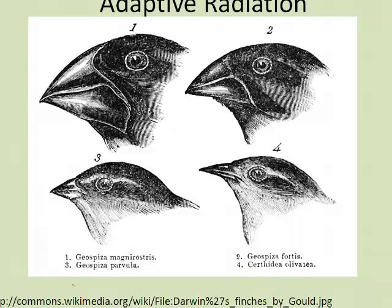The finches of the Galapagos Islands arrived as really just one species from the mainland, probably blown off the coast in some sort of storm. As they experienced different niches, those that were best suited to the individual niches they found themselves in survived, and as a result they began to evolve in different directions. Those that found themselves in an environment requiring feeding on nuts were at an advantage if they had strong beaks that could break the nuts.